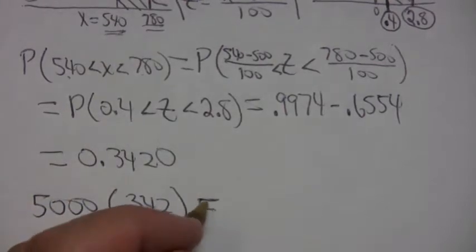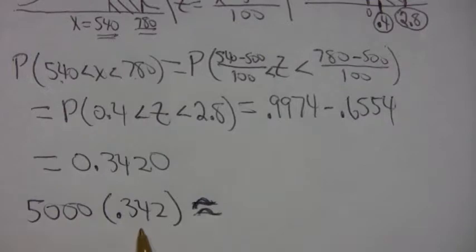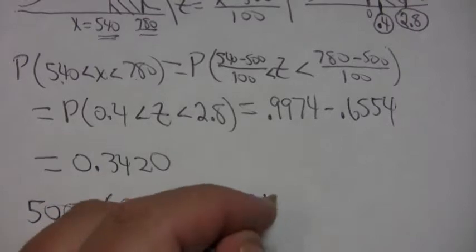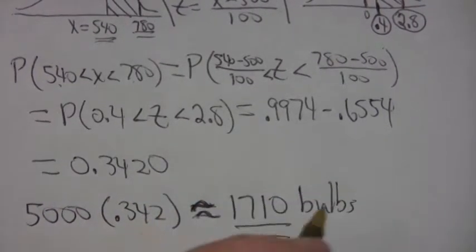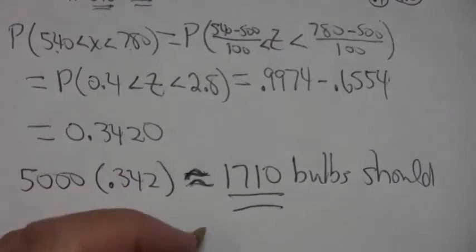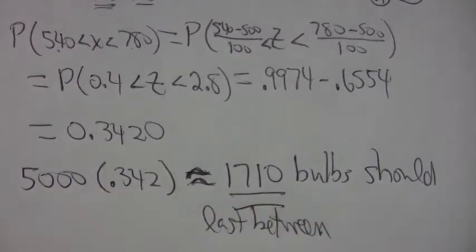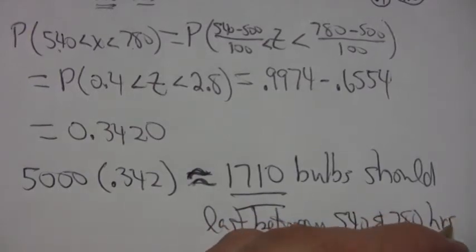And again, we'll round it to the nearest unit, the nearest bulbs. I'm going to say approximately. So if you take 5,000, multiply by 0.342, about 34.2%, to the nearest bulb, you get 1,710 bulbs that should last between 540 and 780 hours.